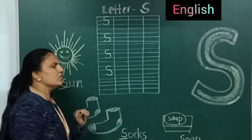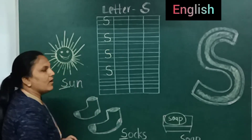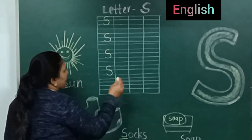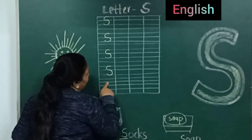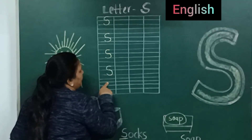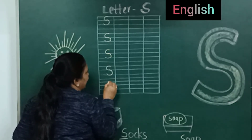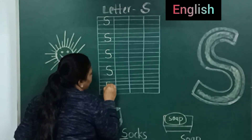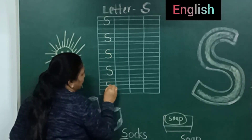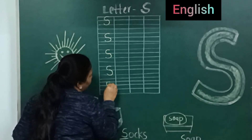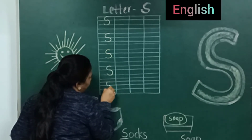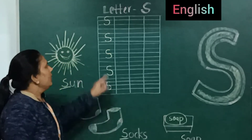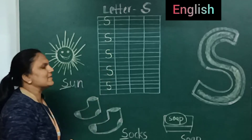S for sun — S, U, N, sun. First, put your pencil on the red line. Make a curve like C to the first blue line, and do another curve to the second blue line. Got it? Here we've completed all this line. Moving on to the next line.